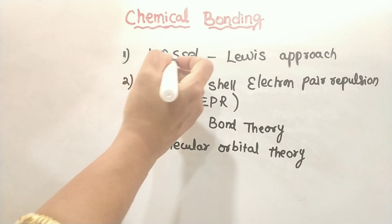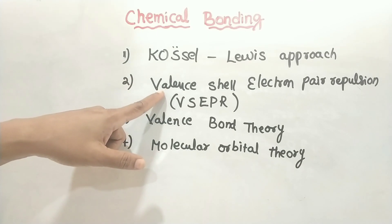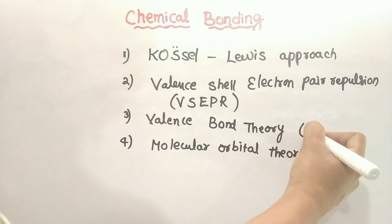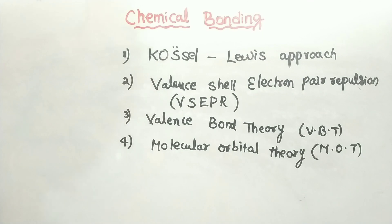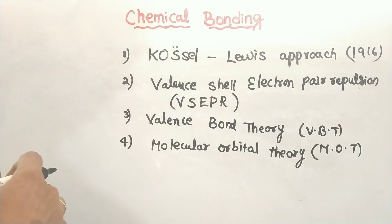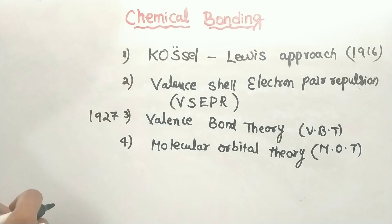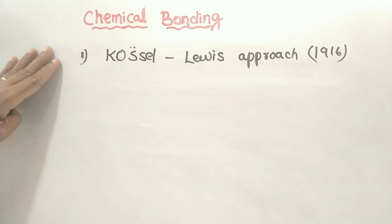The first one is the Kossel-Lewis approach. The second one is the Valence Shell Electron Pair Repulsion — VSEPR theory. The next one is the Valence Bond Theory, VBT. And the last one is the Molecular Orbital Theory, MOT, developed in 1932. We will discuss these theories in this lesson, starting with the Kossel-Lewis approach.